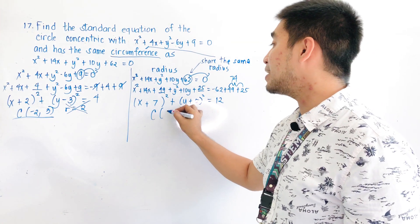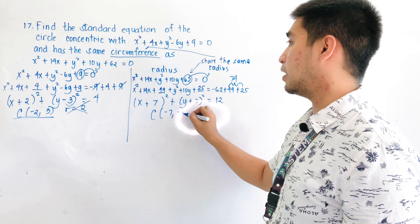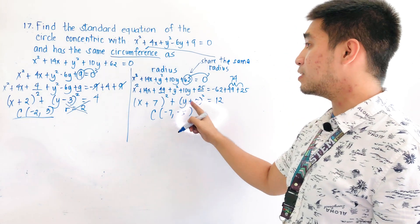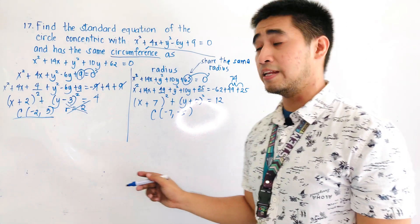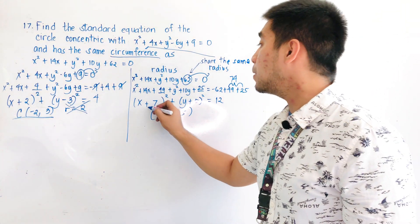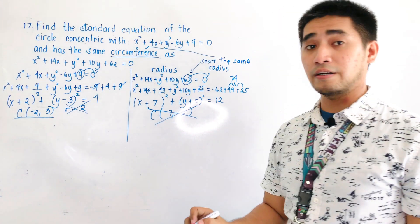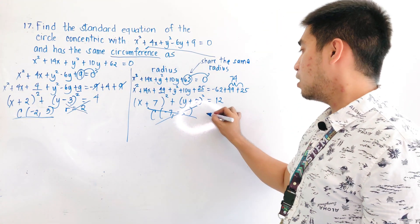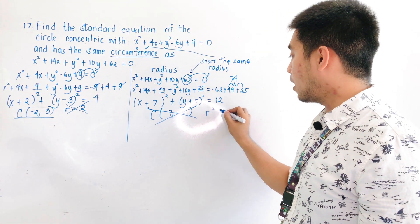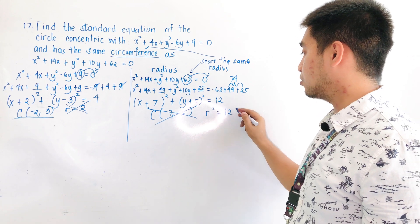We will not be using the center of this equation, which is at (-7, -5). What we are using is r², and r² = 12.